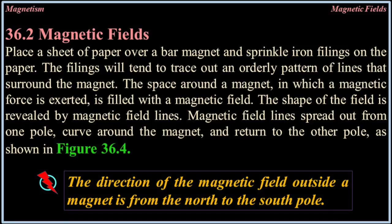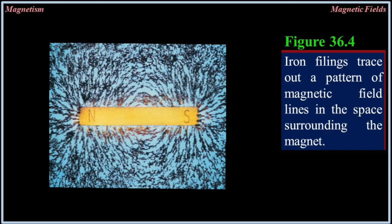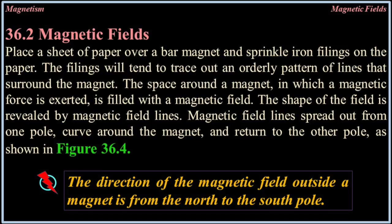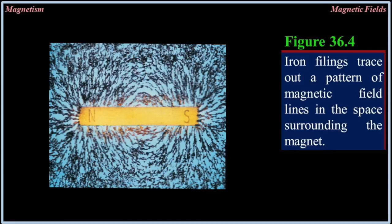36.2 Magnetic fields. Place a sheet of paper over a bar magnet and sprinkle iron filings on the paper. The filings will tend to trace out an orderly pattern of lines that surround the magnet. The space around a magnet in which a magnetic force is exerted is filled with a magnetic field. The shape of the field is revealed by magnetic field lines. Magnetic field lines spread out from one pole, curve around the magnet, and return to the other pole. The direction of a magnetic field outside a magnet is from the north to the south pole. Iron filings trace out a pattern of magnetic field lines in the space surrounding the magnet.